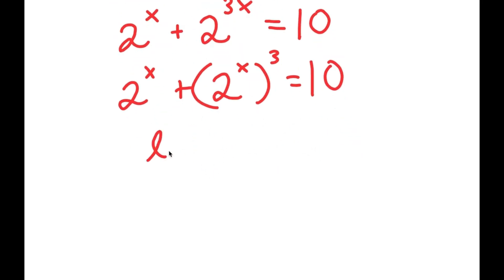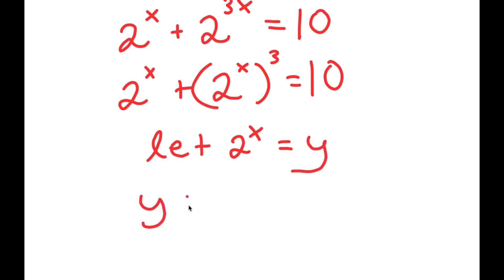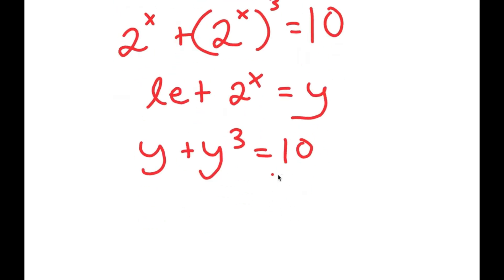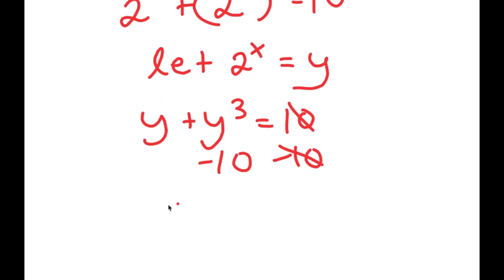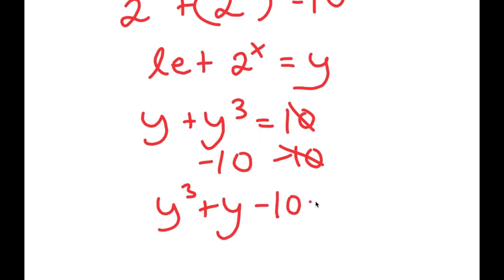Now I'm going to let 2 to the power of x equal the variable y. So I get y plus y to the power of 3 is equal to 10. If I subtract 10 from both sides, these two cancel out, and I get y to the power of 3 plus y minus 10 is equal to 0.